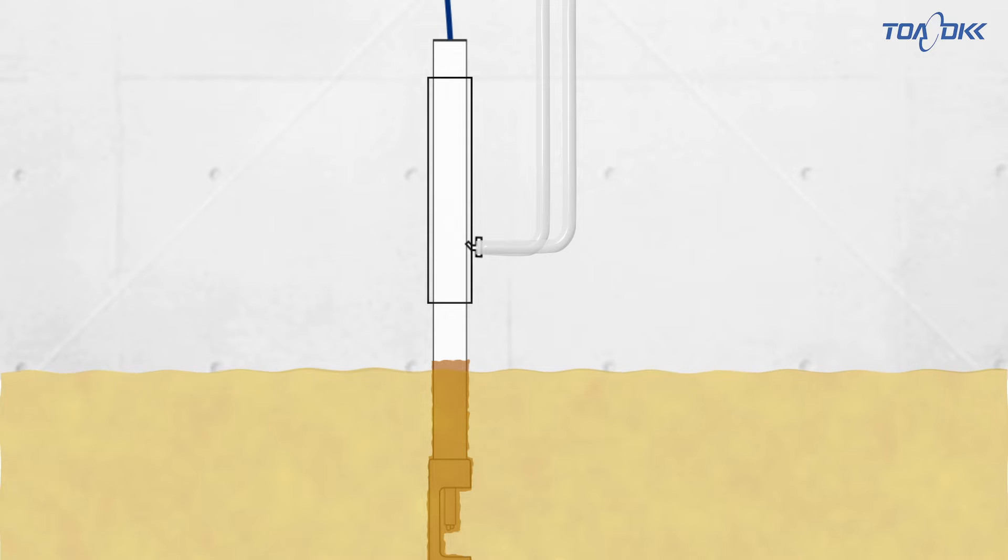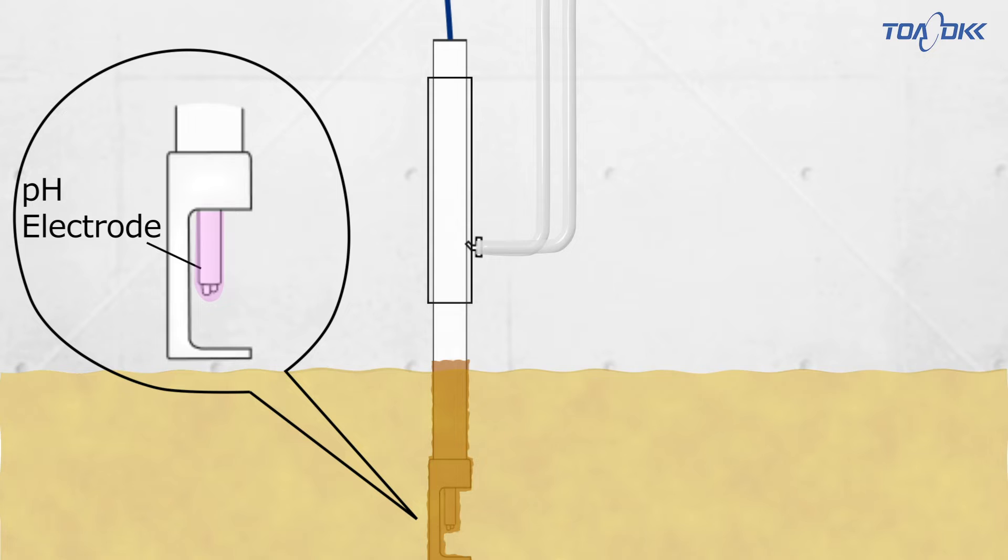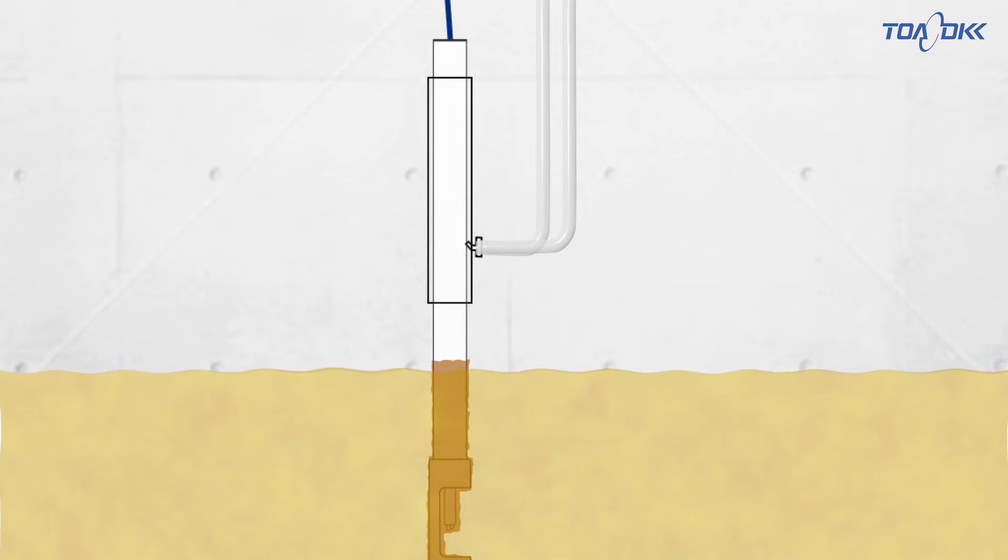The cleaning operation is explained with illustrations. This is the pH electrode. The cleaning tank is installed above the water surface.